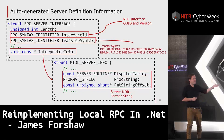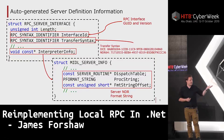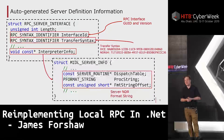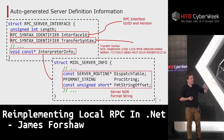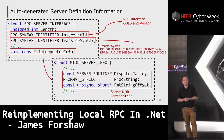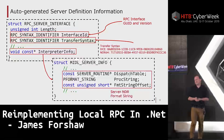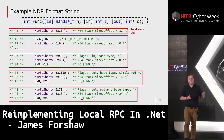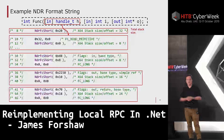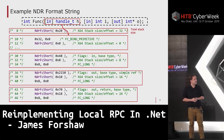In the generated server code you have the RPC server interface structure, which defines the list of functions you can dispatch, the interface ID with the unique identifier and version, the transfer syntax defining the protocol between client and server, and the interpreter info field pointing to a separate structure defining your dispatch table. There's also a format string — a set of bytecode that instructs the RPC runtime how to marshal parameters between client and server.